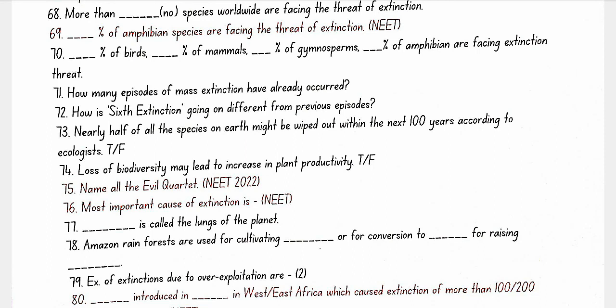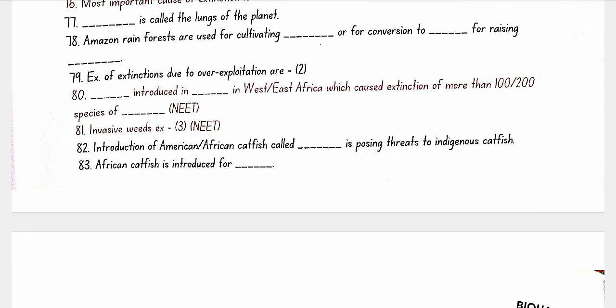The evil quartet: the four main causes of biodiversity loss are (1) habitat loss and fragmentation — the most important cause; (2) overexploitation; (3) alien species invasion; (4) co-extinction. The Amazonian rainforest is called the lungs of the planet. It is cleared for cultivating soya beans or converted to grassland for raising beef cattle. Examples of extinction due to overexploitation include Steller's sea cow and the passenger pigeon.